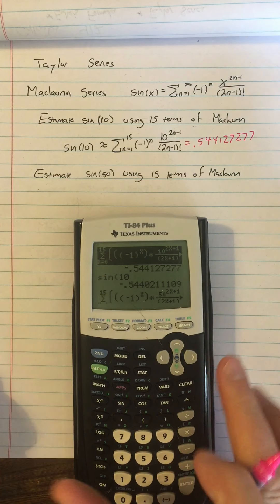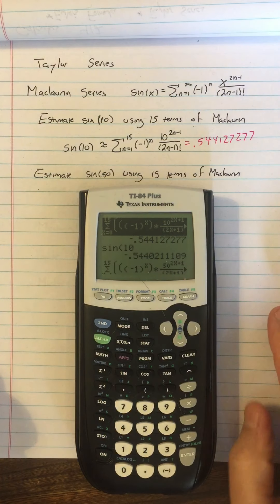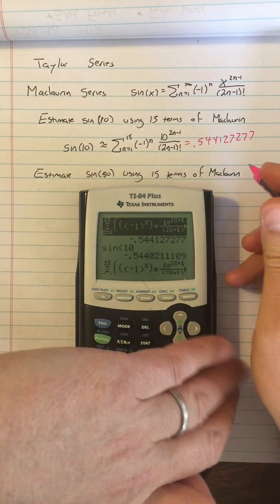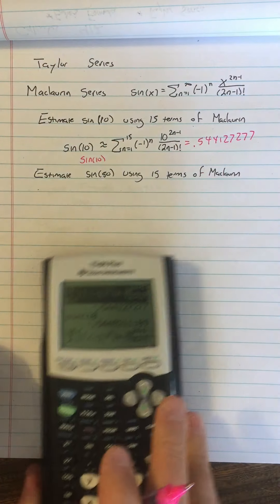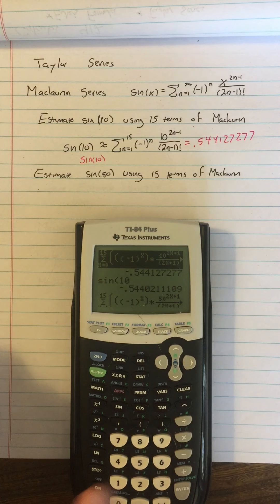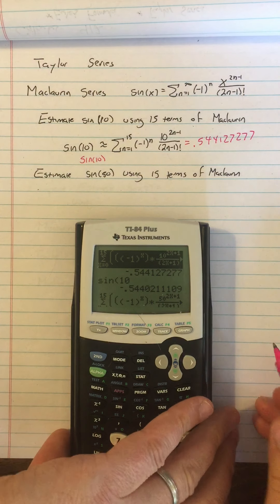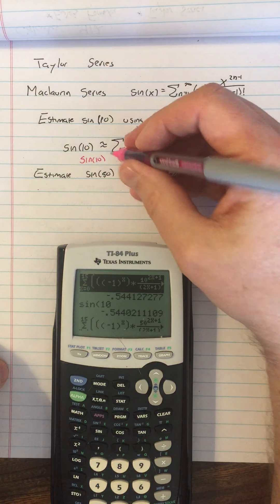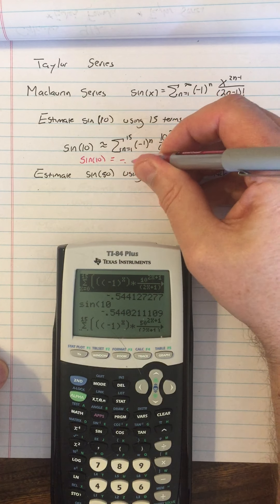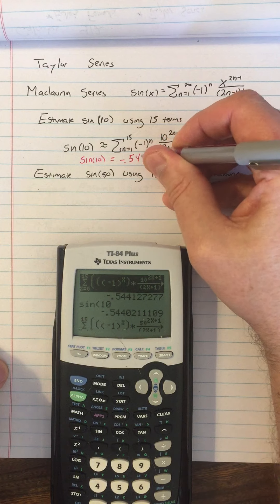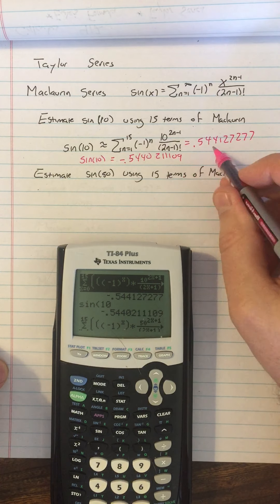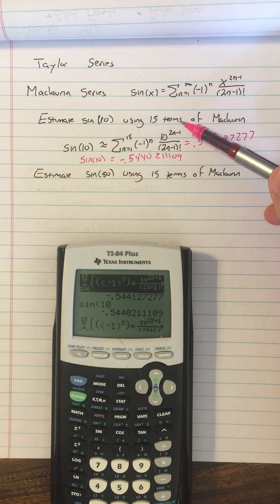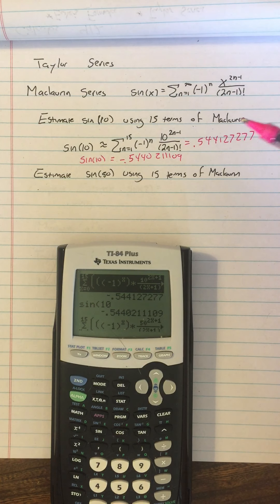And that compares to the actual value of sine of 10 that we have here for comparison. So the actual value of sine of 10, or again, this calculator's estimate of the actual value of sine of 10, because the sine of 10 is irrational, it can't be stated exactly in decimals at all. But a much better estimate is negative 0.544021109. So you can see that the Maclaurin series with 15 terms is close, but it's a little far away.